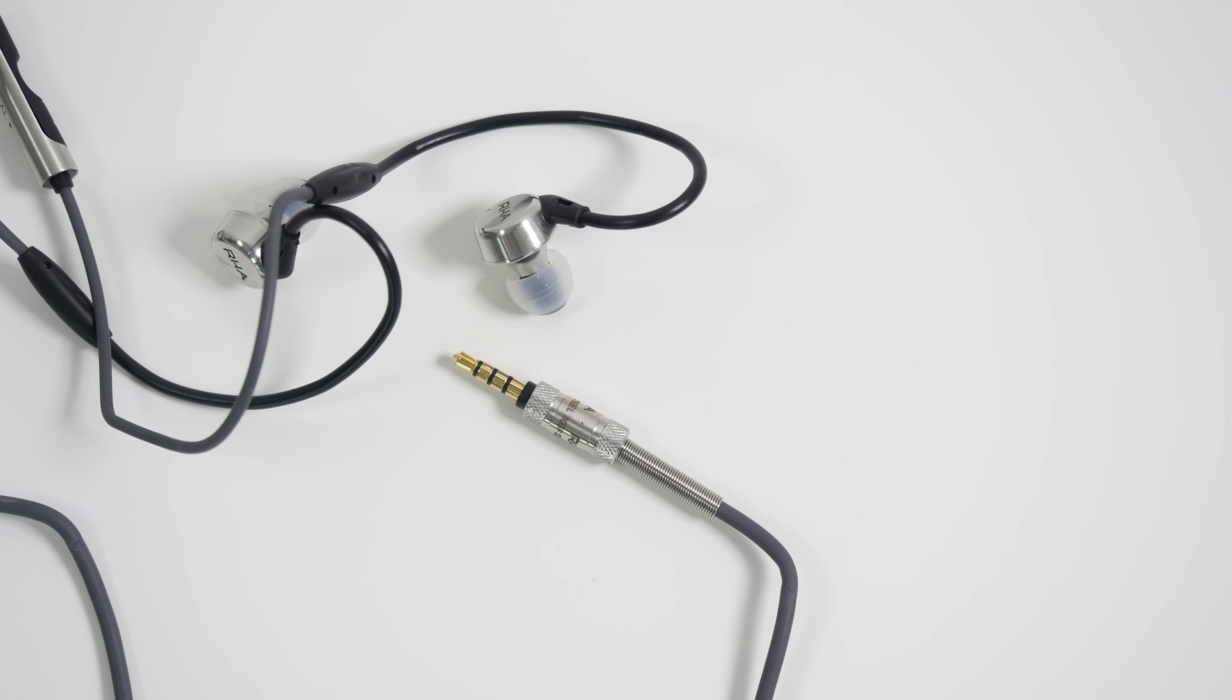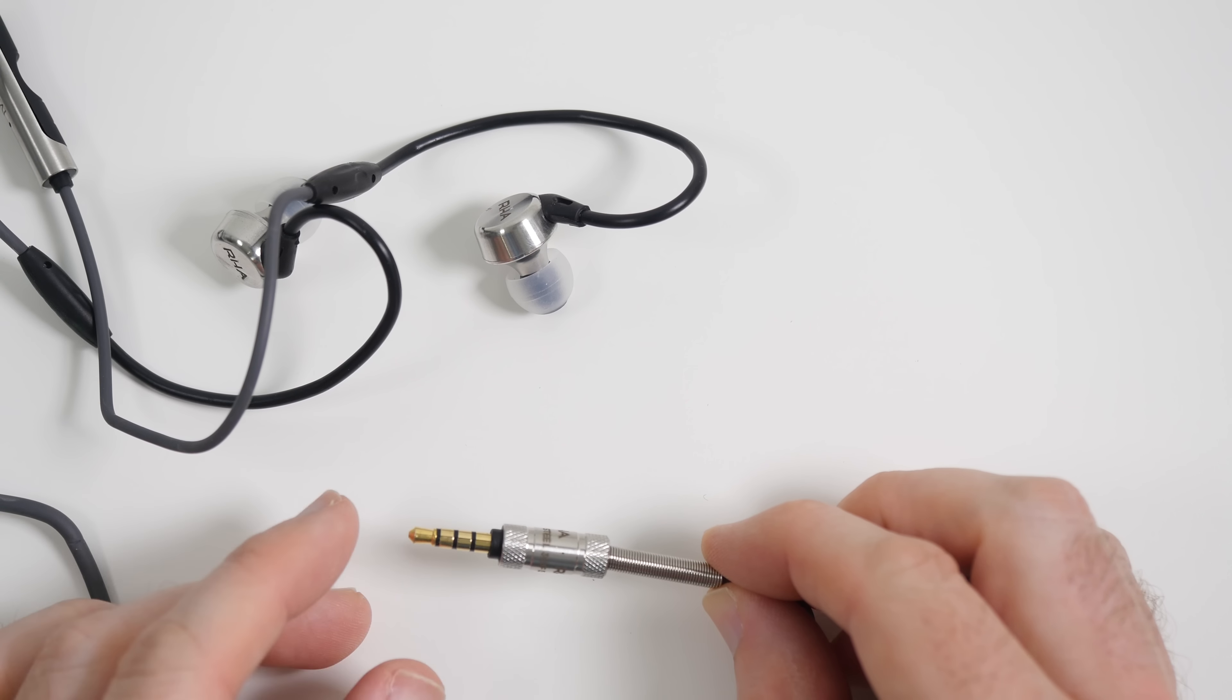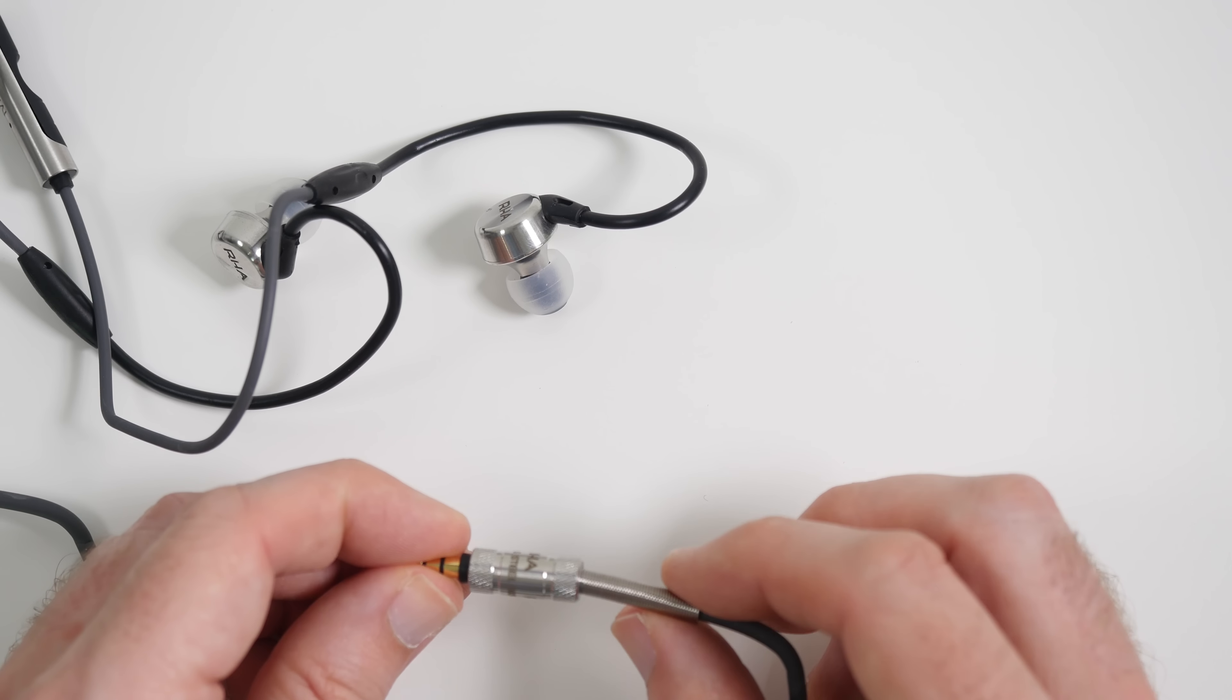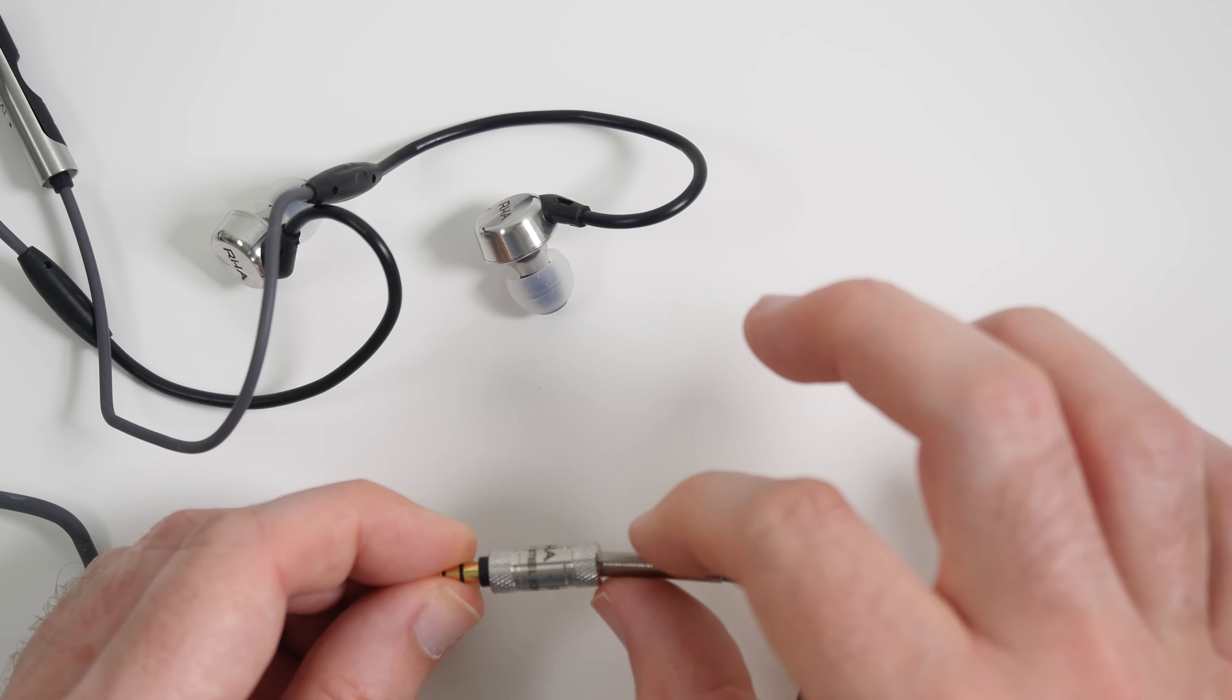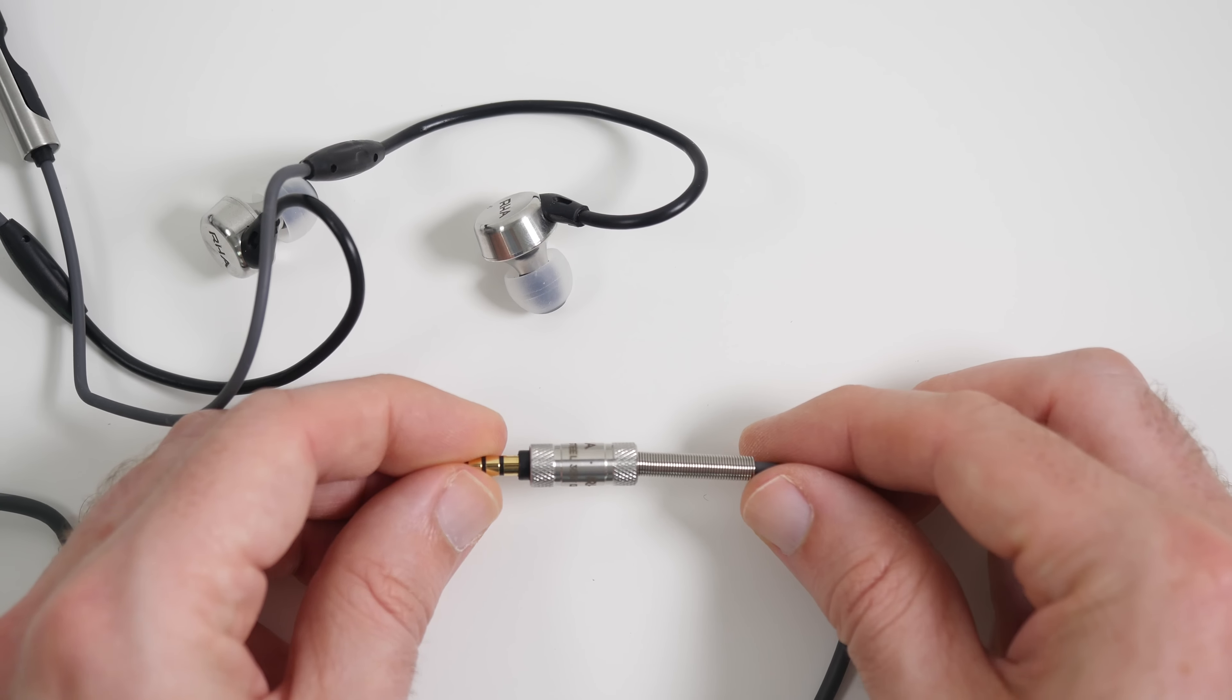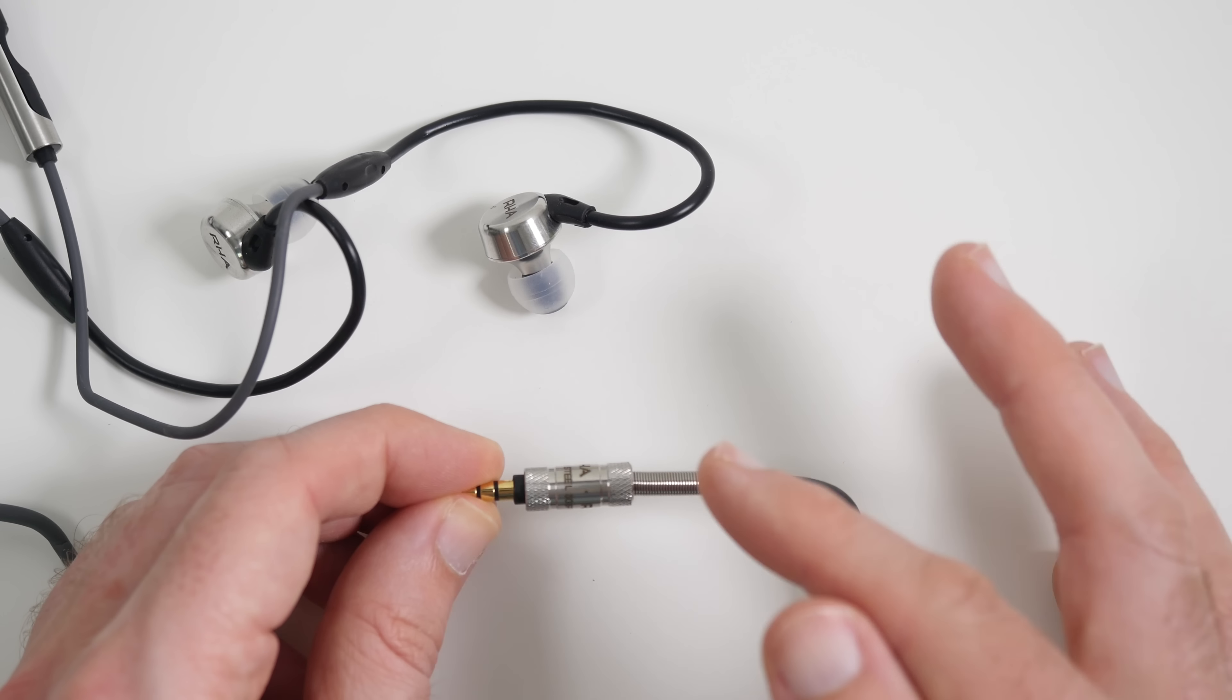So here we go, let's take a closer look at the MA 750i's and we'll start with the termination here, three and a half millimeter audio jack and it's so nicely made. We've got this spring portion here so we don't put too much stress on the connection. It's just very high quality construction.